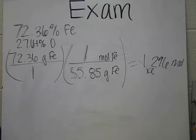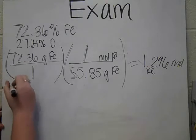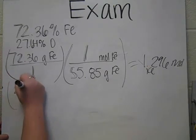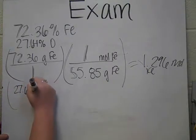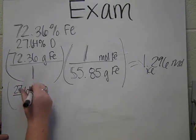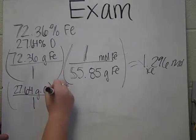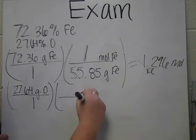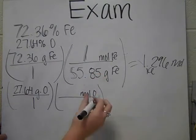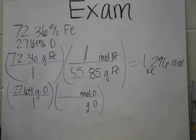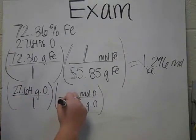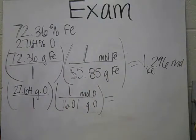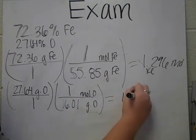Then, we're going to try and figure out the moles of oxygen. So then, we have 27.64 g O. You put it over one, and then you take what you want over what you got. And then again, you'll find the grams on your periodic table. And that's 16.01, and that will equal a mole. And then, when you plug it in on your calculator, it's going to equal 1.726.